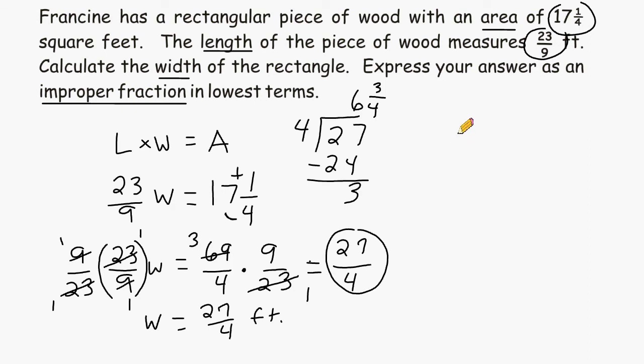Now another way of solving this problem is by taking the area, which is 17 and 1 quarter, and dividing it by the given dimension, which is 23 ninths. So we can rename 17 and 1 quarter as 69 over 4. And we would multiply that by the reciprocal of 23 over 9, which is 9 23rds.